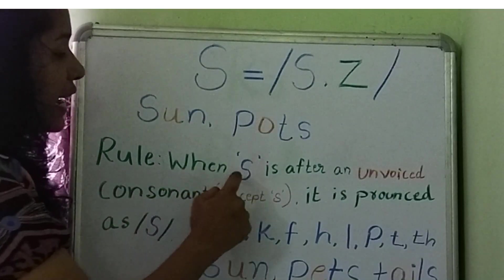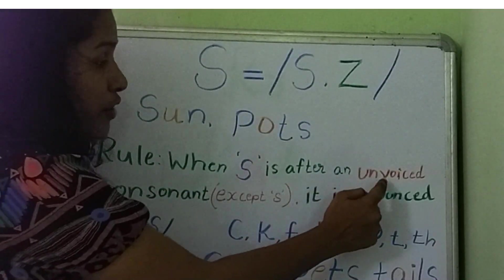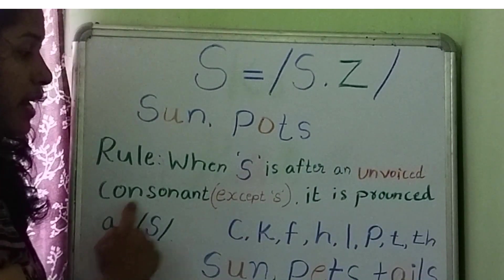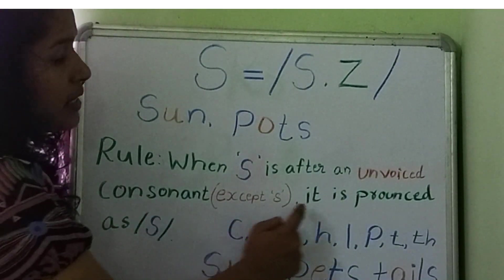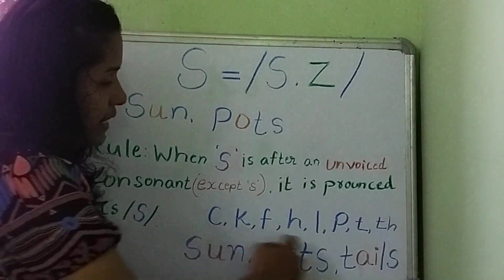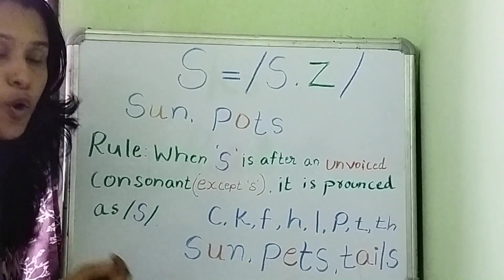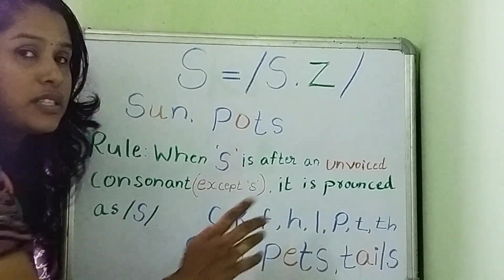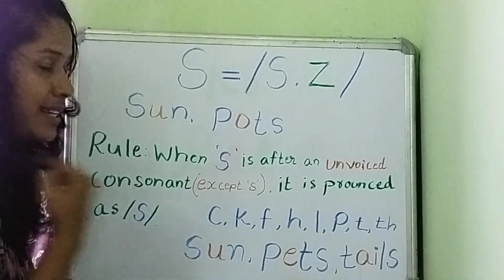As per the rule, when S is after an unvoiced consonant, except S, it is pronounced as S. See here, these consonant letters are unvoiced. When we say this letter sound, we don't use our voice box. Let's see.